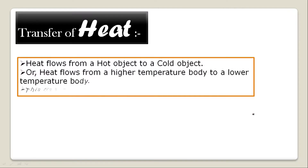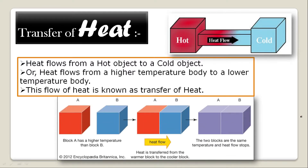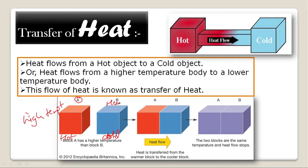Heat flows from a hot object to a cold object, or from a higher temperature body to a lower temperature body. Heat is a form of energy. Here we have some figures: Block A is a hotter body and Block B is a cold body. The hot body has a high temperature and the cold body has a low temperature.